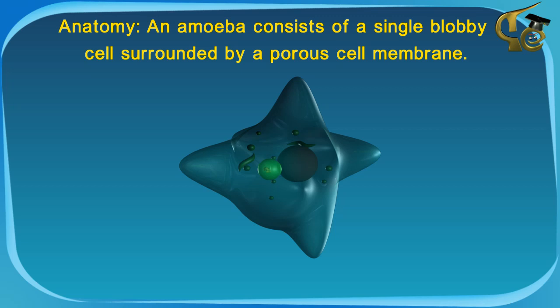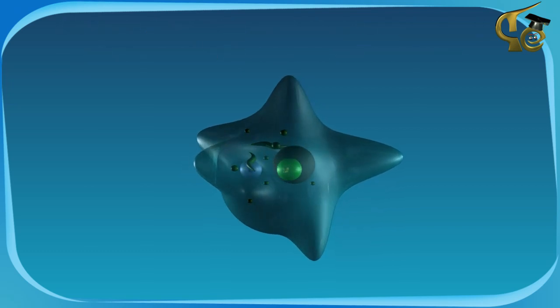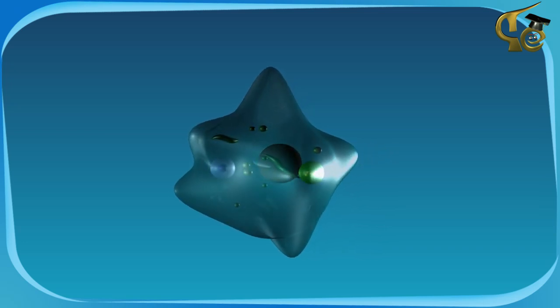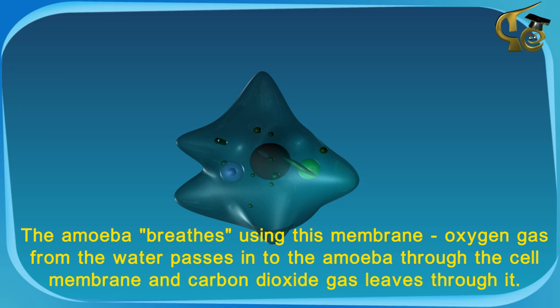Anatomy: An amoeba consists of a single blobby cell surrounded by a porous cell membrane. The amoeba breathes using this membrane. Oxygen gas from the water passes into the amoeba through the cell membrane and carbon dioxide gas leaves through it.